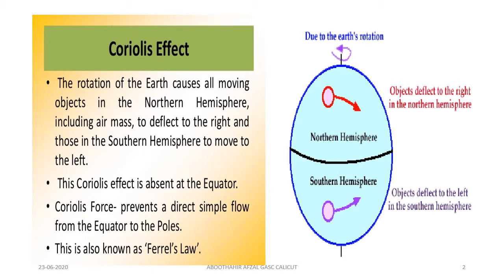What is the Coriolis effect? The rotation of the earth causes all moving objects in the northern hemisphere, including air mass, to deflect to the right, and those in the southern hemisphere to move to the left. This Coriolis effect is absent at the equator, and this Coriolis force prevents a direct simple flow from the equator to the poles.